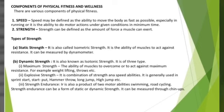Maximum strength is the ability of muscles to overcome or act against maximum resistance — for example, weight lifting, throws, etc. Explosive strength is a combination of strength and speed abilities, generally used in sprint starts, shot put, hammer throw, long jump, high jump, etc. Strength endurance is also a product of two motor abilities, such as in swimming and road cycling. Strength endurance can be a form of static or dynamic strength and can be measured through chin-ups.